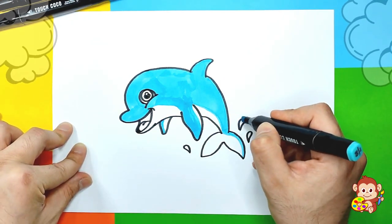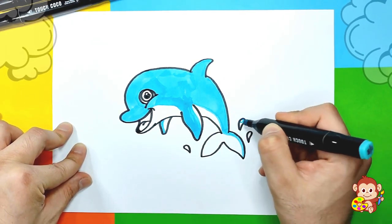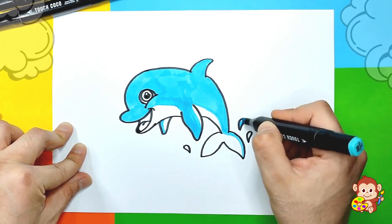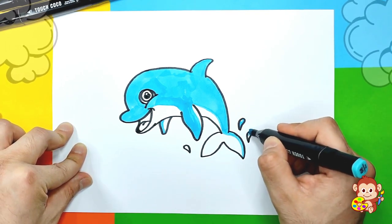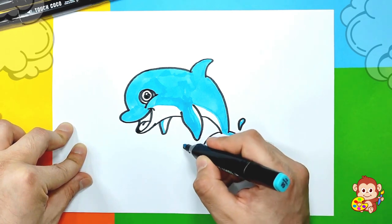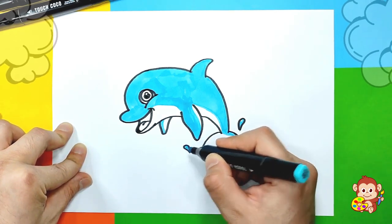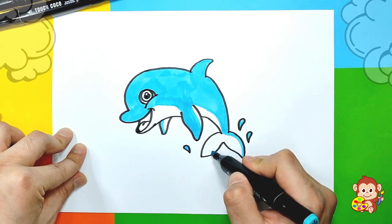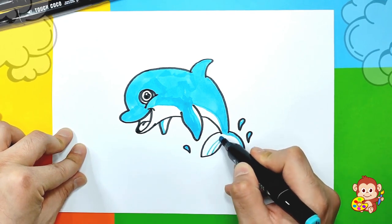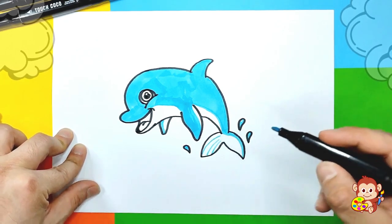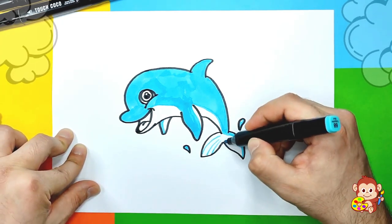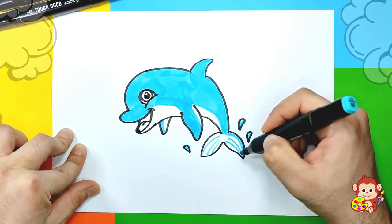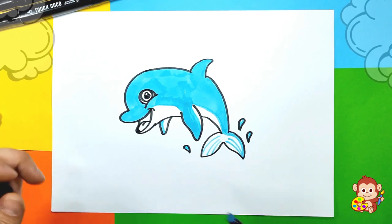We're gonna also color this one, but we're gonna leave a little bit of white space to make water shiny, just like that. We can also add maybe those little lines that dolphins usually have, just a few of those, like that.